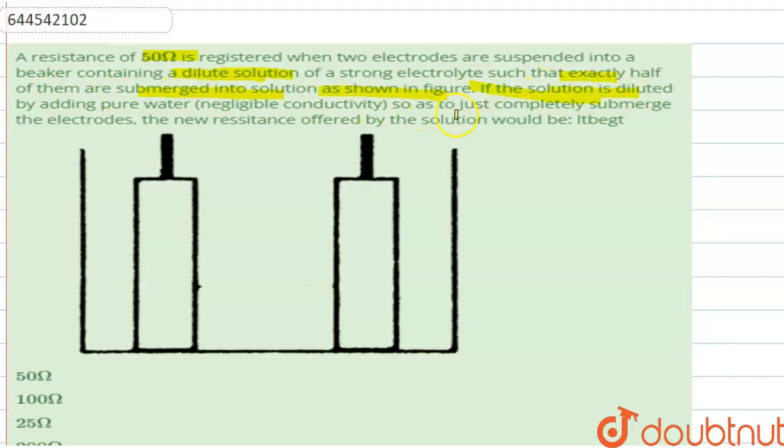If the solution is diluted by adding pure water so as to just completely submerge the electrodes, the new resistance offered by the solution would be?